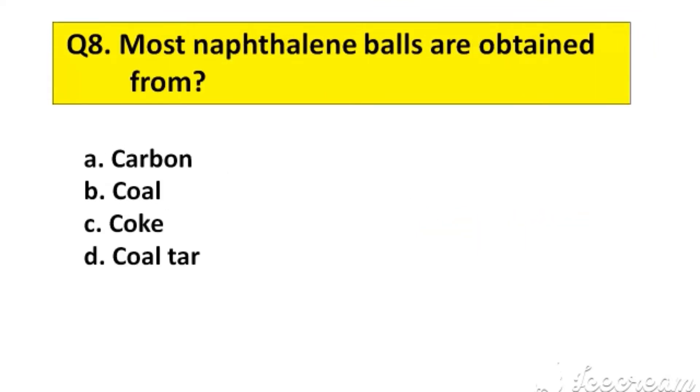Question number 8. Most naphthalene balls are obtained from option A: Carbon, B: Coal, C: Coke, D: Coal tar.